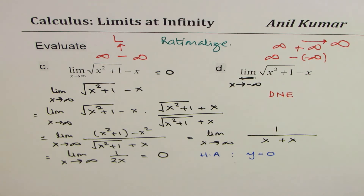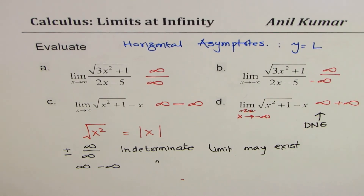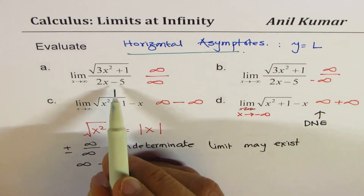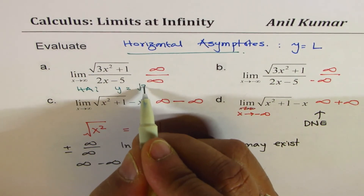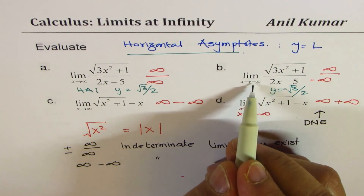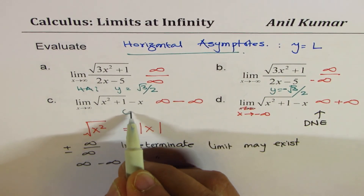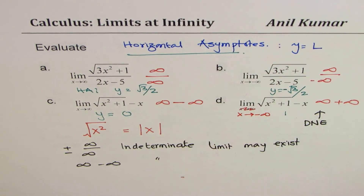So what we learned in this video is the technique of finding limits for examples involving square root of x squared. Finding the limit as x approaches infinity also identifies horizontal asymptotes. We found horizontal asymptotes in three cases: y equals square root of 3 over 2 for Example A, y equals negative square root of 3 over 2 for Example B, and y equals 0 for Example C.